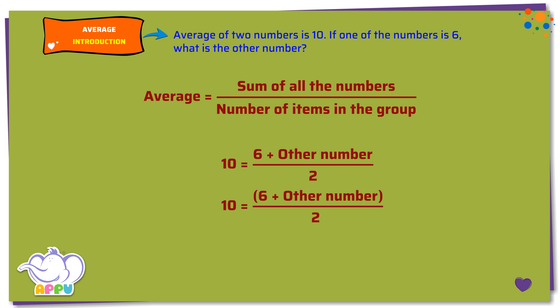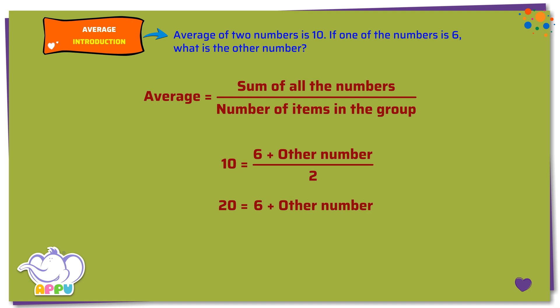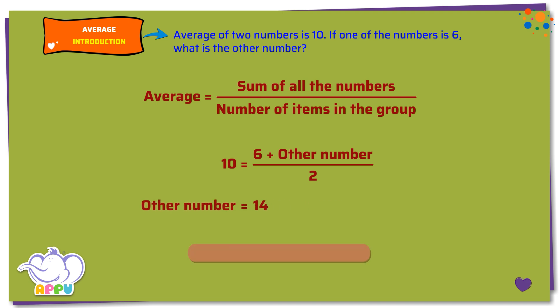Let's simplify this. First, multiply both sides by 2. We get 2 times 10 equals 6 plus other number, which is 20 equals 6 plus other number. Next, we subtract 6 from both sides. We get 20 minus 6 equals 6 plus other number minus 6. 14 equals other number. So the other number is 14.